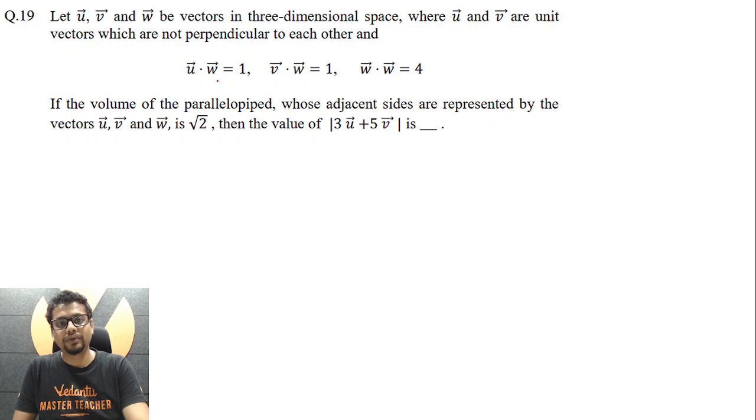u vector dot w vector is one, v vector dot w vector is one, w vector dot w vector is four. That essentially means magnitude of w vector is two.